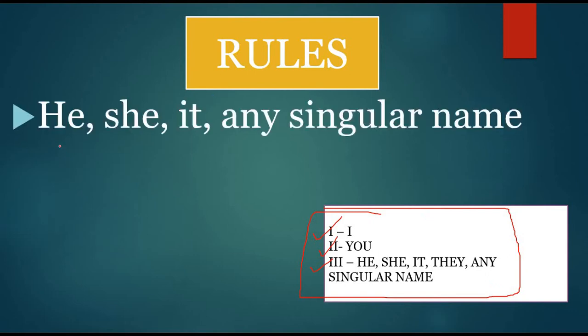Now talking about rules, first rule is 'is' can be used by only four persons: he, she, it, and any singular name like Rama, Krishna, Surya.